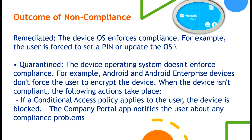What are the outcomes of non-compliance? The first is remediation — the device OS enforces compliance. For example, the user is forced to set a PIN or update the OS; without doing so, they cannot proceed further. The second outcome is quarantine — the device operating system does not enforce compliance. For example, Android or Android Enterprise devices do not force the user to encrypt the device. When the device is not compliant, if conditional access policies apply to the user, the device is blocked and the Company Portal app notifies the user about compliance problems.